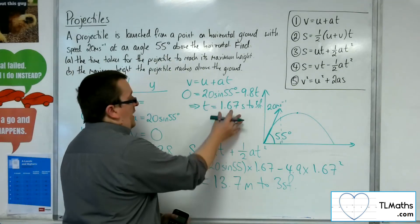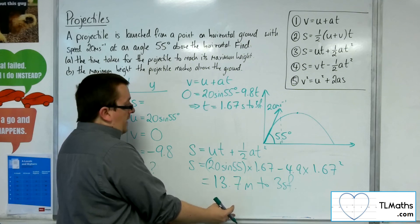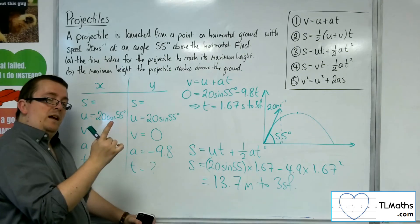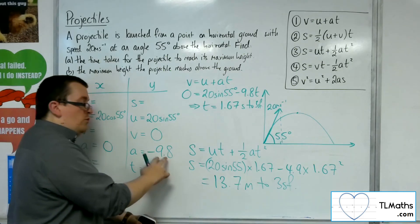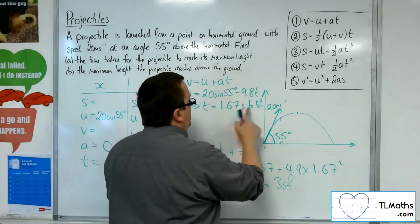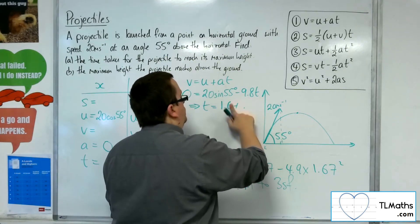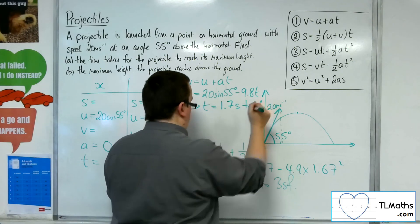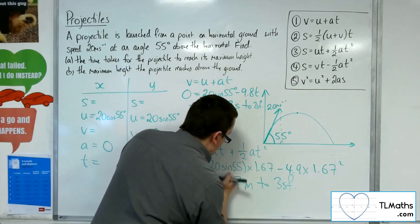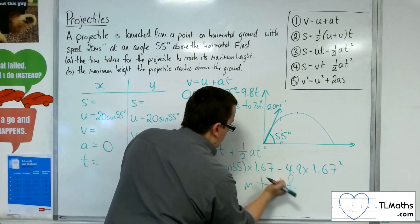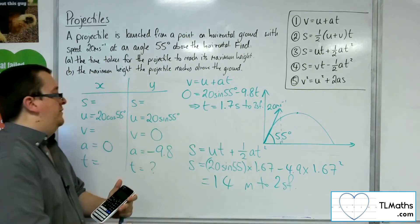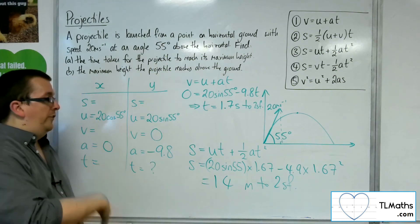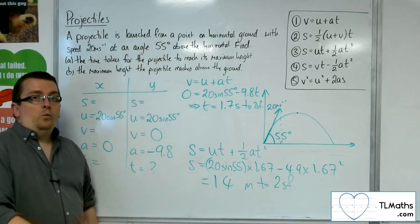Really, my final answers should be given to two significant figures, because that's how accurate my acceleration is. So my two answers should be 1.7 seconds to two significant figures, and 14 metres to two significant figures — accurate to two significant figures due to gravity being given to two significant figures. So that's how I can utilise the SUVAT equations to deal with this problem.